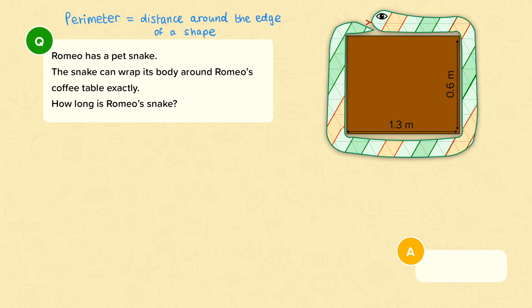We'll start with a simple example. We're told that Romeo has a pet snake. The snake can wrap its body around Romeo's coffee table exactly. How long is Romeo's snake?